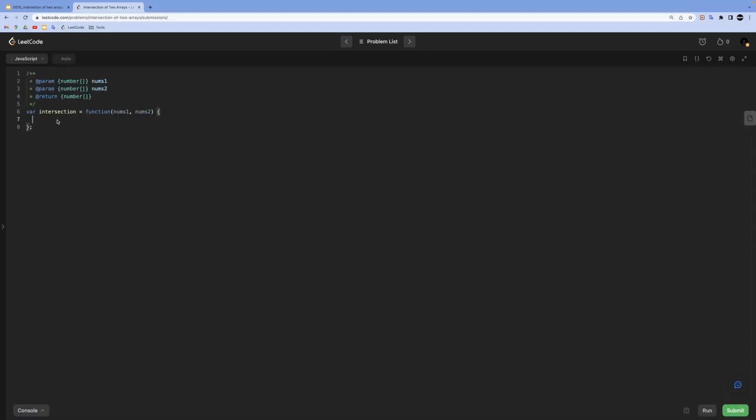For set solution, first we will convert both nums into their set equivalents. So we will do const nums1Set is going to be a new set of nums1, the same thing for nums2. Then we will have a result array: const result equal to an empty array.